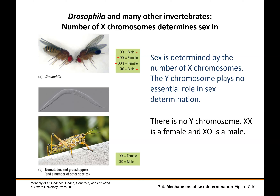In other insects there's no Y chromosome at all. It is simply the presence of two X chromosomes that produces a female and only one X chromosome that produces a male. The thing to keep track of here is the example organism and what's actually happening: these invertebrates are lacking an X chromosome, and that is what is producing males instead of females.